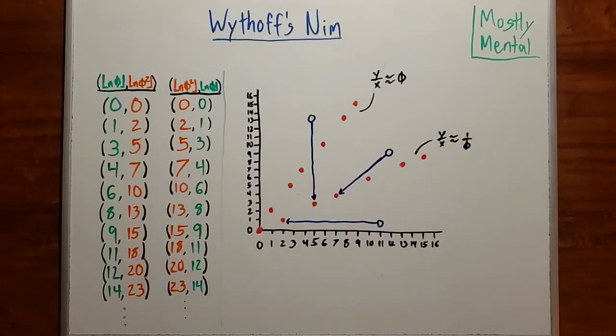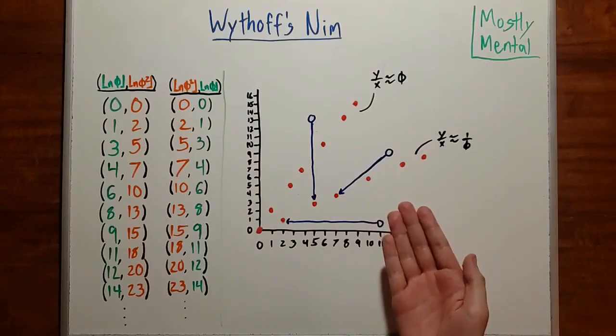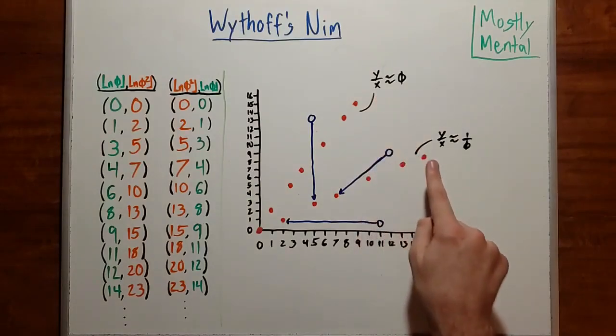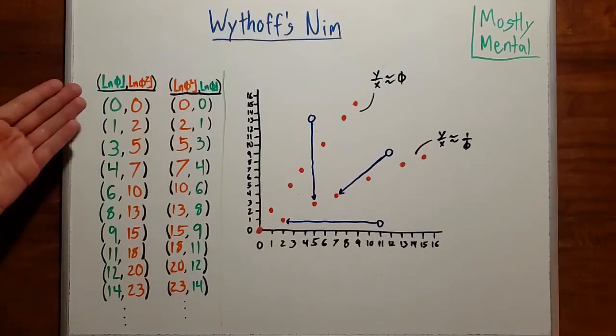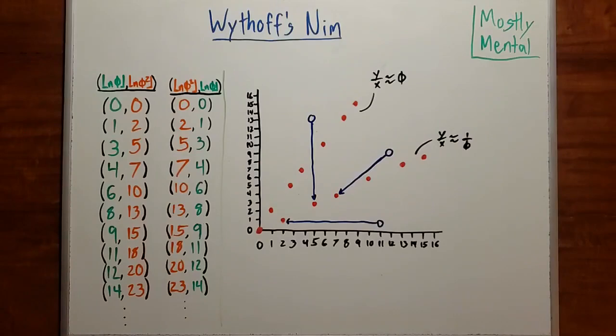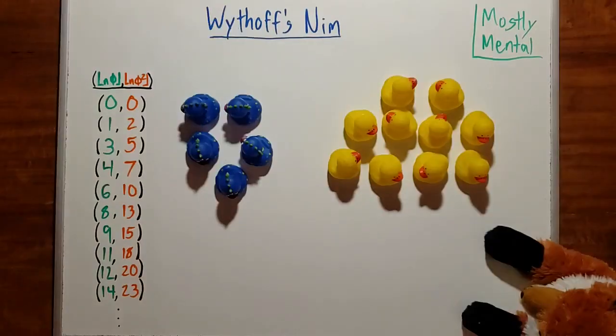In practice, instead of actually plotting the points, it's easier to just look at the ratios of the sizes to decide whether we should remove from the larger pile or from both. And we can use the Beatty sequences to find the right target. Okay, this theory is cool and all, but remember, we're here to win a game, not just to look at pretty math. So let's put it all together and challenge Aurora to a rematch.